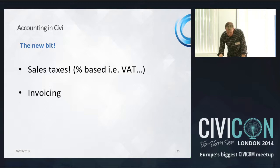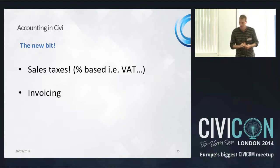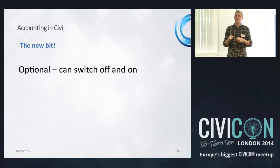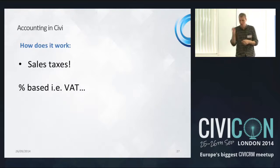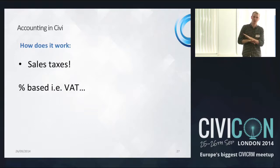Now the new, more exciting stuff: sales taxes and invoices, coming in CiviCRM version 4.6. About half of you charge VAT or sales tax on your income, and some need to fire out invoices. This is what we've been working on over the past six months with help from the core team, Web Access, and JMA Consulting in Canada. Everything I'm about to show you is completely optional — you can switch it all off.